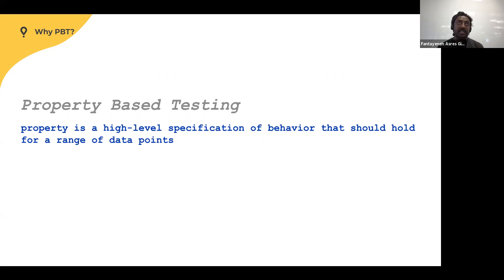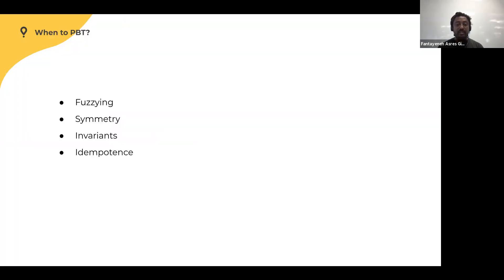Property-based testing, at a high level, is about testing behavior through specification rather than example-based testing. Instead of generating input data yourself, you let the computer or algorithm generate it for you, which is great for catching subtle edge-case bugs. There are a few patterns or motivations for when to use it: fuzzing, test symmetry, assessing invariants, and when code is idempotent so you can assess properties about the system.